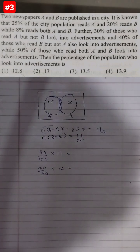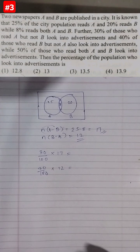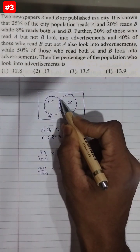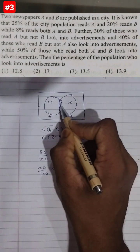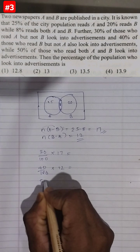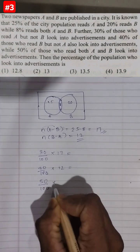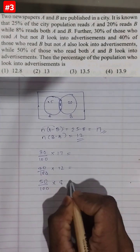50% of those who read both A and B look into advertisements. Those who read both A and B, that is this intersection section, which is 8. So 50% of 8.